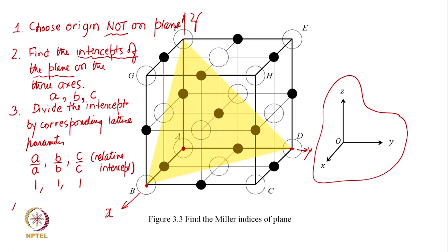The fourth and the crazy step is take the reciprocals. Here of course, it is trivial. Even if we had forgotten to take the reciprocal we would have got the correct answer, but not always. We will not always be so lucky. Here since all were 1 and reciprocal of 1 is also 1, here we get this step is trivial.